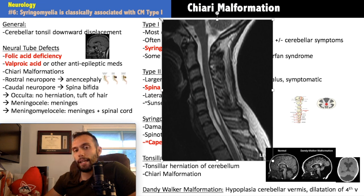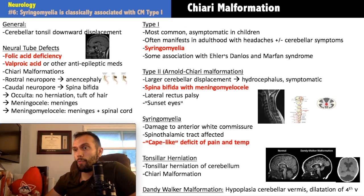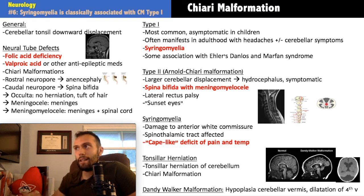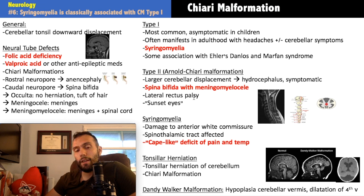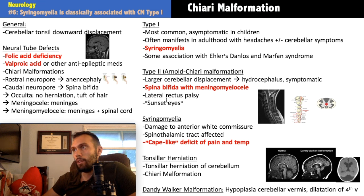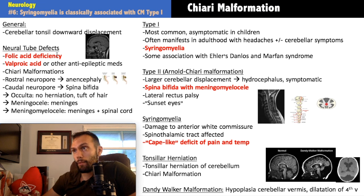Chiari Type 2, also called Arnold-Chiari malformation, involves larger cerebellar displacement and typically presents in infancy or early childhood with hydrocephalus — not in adults like Type 1. It classically presents with spina bifida and myelomeningocele. Lateral rectus palsy and sunset eyes from increased ICP are also seen. Neural tube defects are associated with folic acid (vitamin B9) deficiency and anti-seizure medications, particularly valproic acid and phenytoin.